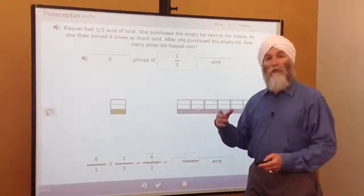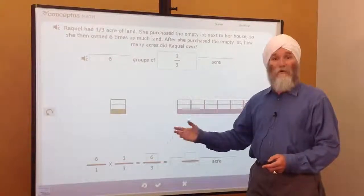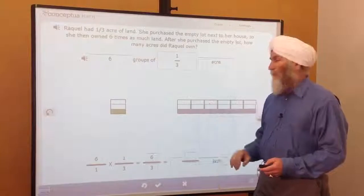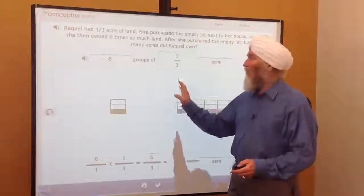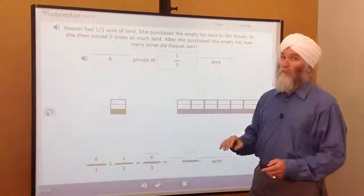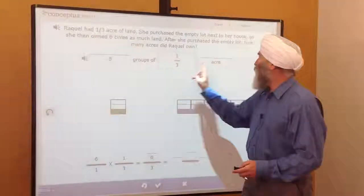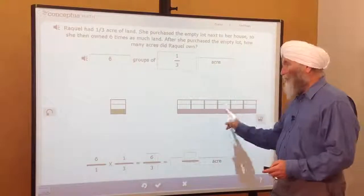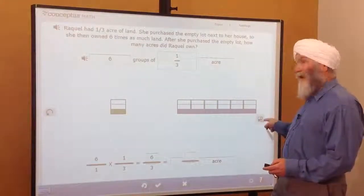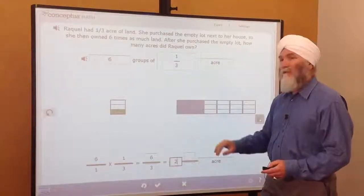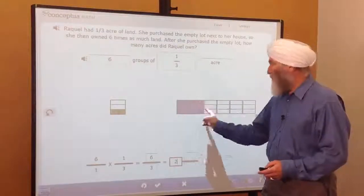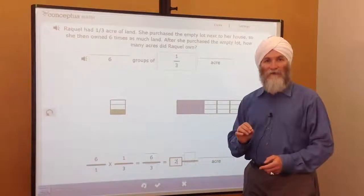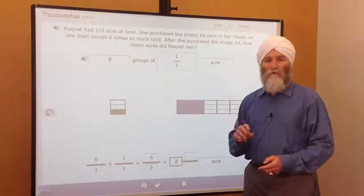As students move beyond the double number line, we introduce a second manipulative. We introduce the area model. Here we have a problem about acres of land, very appropriate for an area model. Six groups of one-third acre. Here we see the one-third acre, and the student makes six groups. By reorganizing, they can see that the six groups of one-third are actually two acres. And so now this multiplication that involves fractions becomes much more concrete.